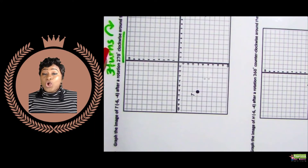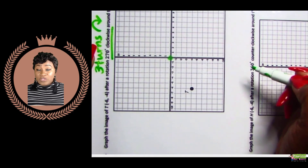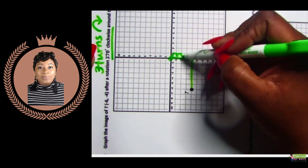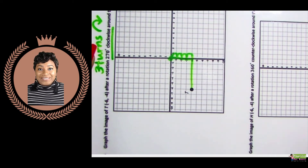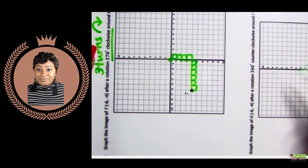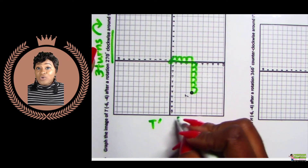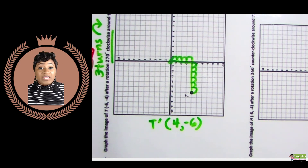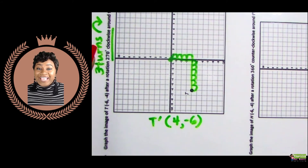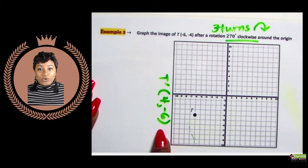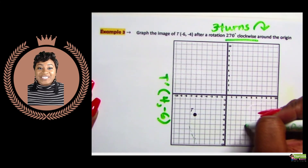With the graph paper still rotated, we're going to name our new points. We'll begin at the origin and count units — left to right, then up and down. To get from the origin to point T, we move four units to the right and six units down. Our new coordinate for T prime will be positive four, negative six — positive four because we moved four units to the right, and negative six because we moved six units down. We'll rotate the graph paper back and graph T prime at (4, -6). Here's our new point.